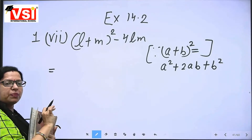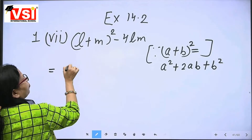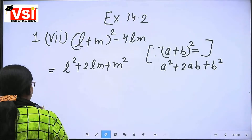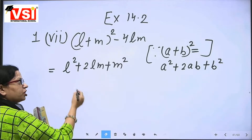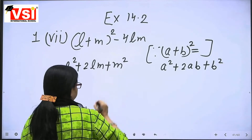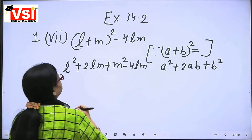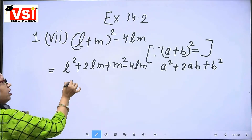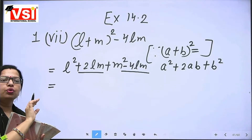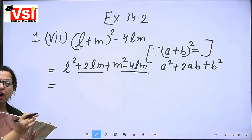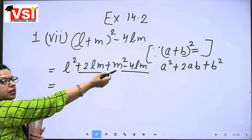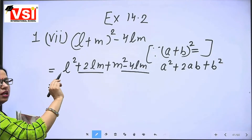Replace A with L and M accordingly. So the expanded form is L square plus 2LM plus M square — that is how we expand A plus B whole square. The next term we will subtract: minus 4LM.